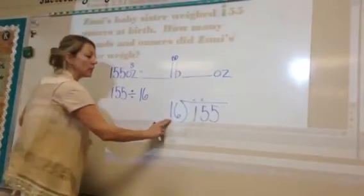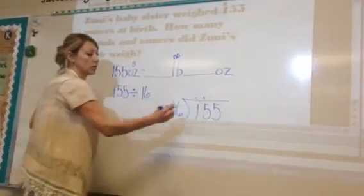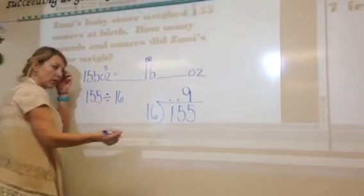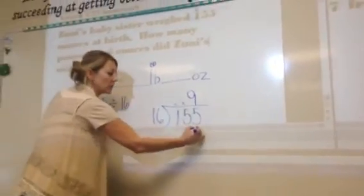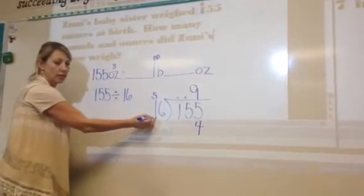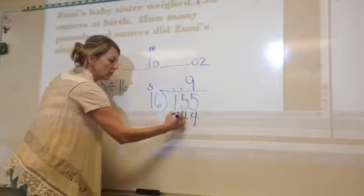Since we barely missed going into 15, and this is a pretty big number, we're going to try 9. We're going to multiply it out and see what we have left over. 9 times 6 is 54. Put down your 4, carry your 5. 9 times 1 is 9, plus the 5 you carried is 14.